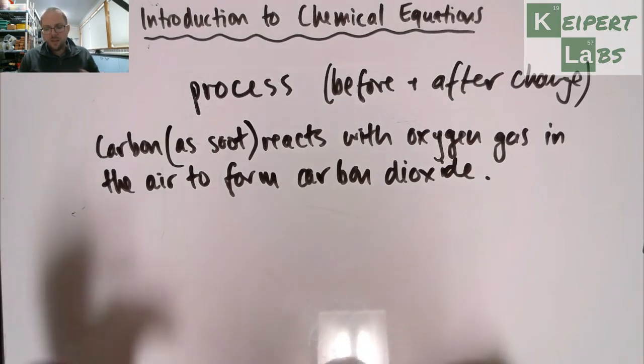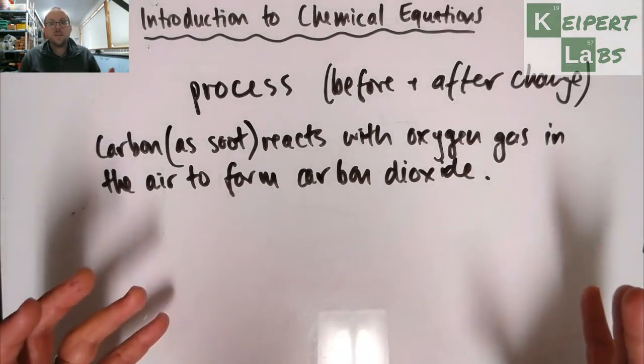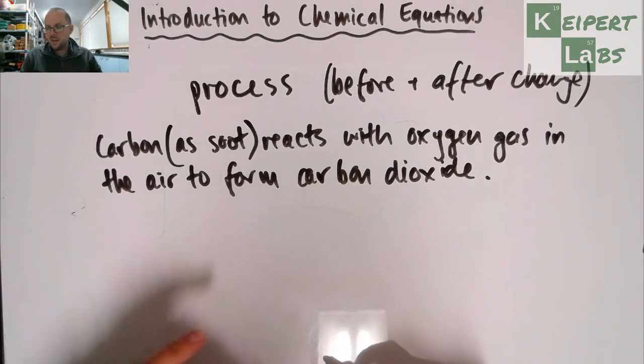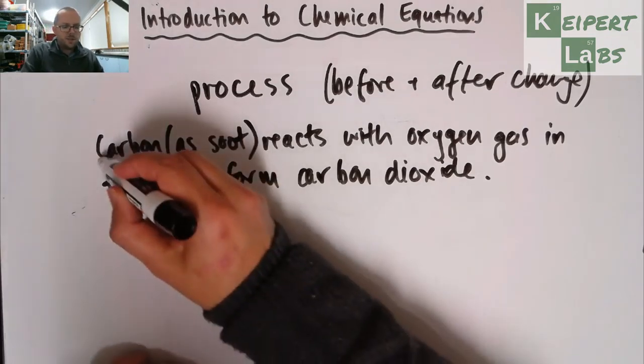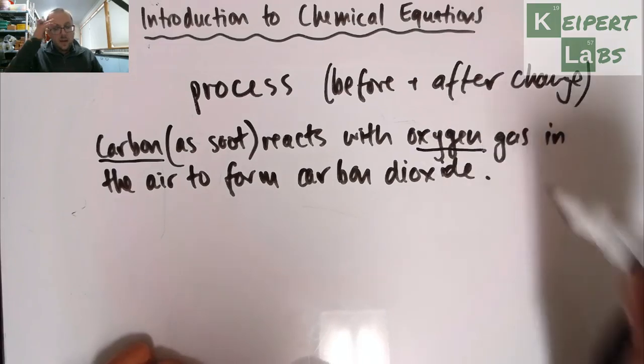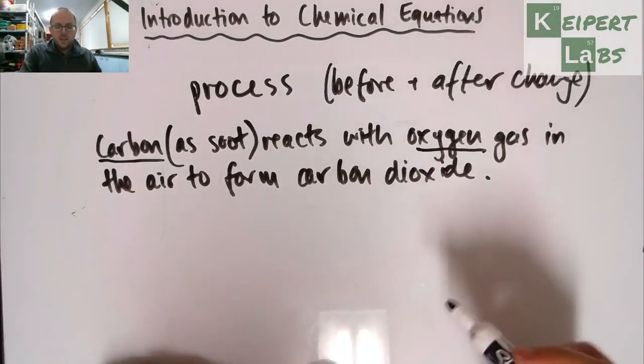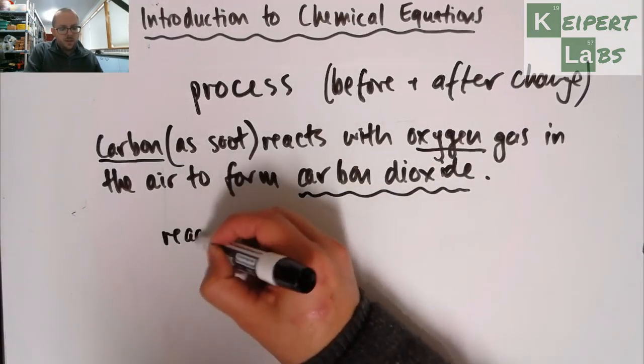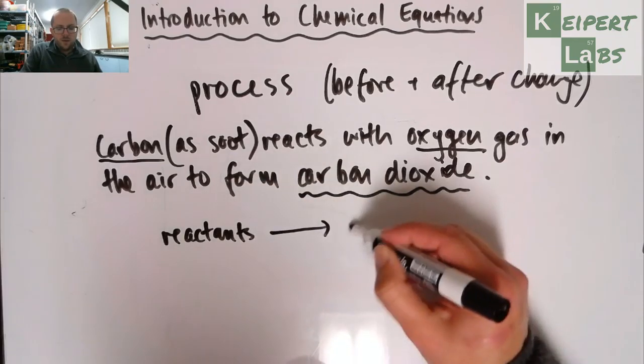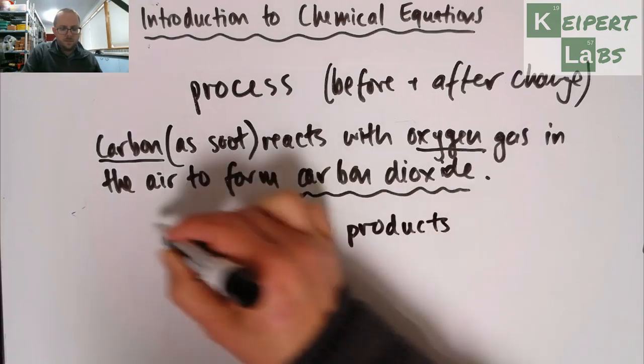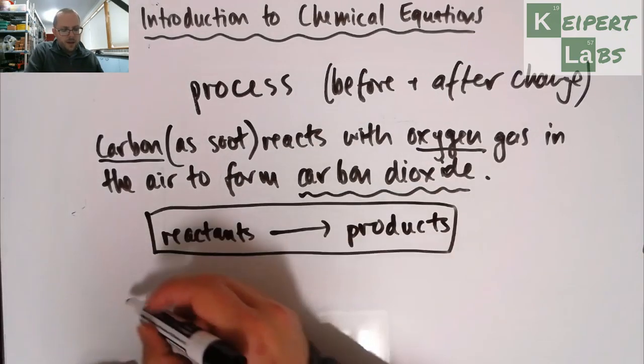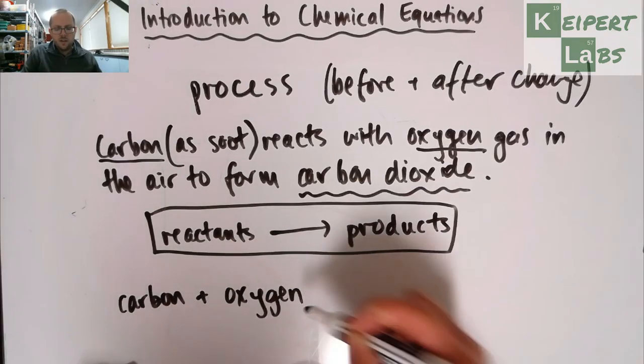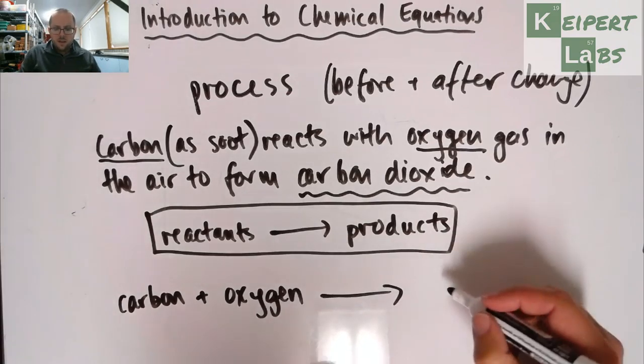However, if chemists always had to write these processes using statements like this, it gets very time consuming and tedious. And so we can represent it with our chemical equation. So we can think about our reactants. So in this case, we've got carbon and oxygen. So we've got reactants on the left and products on the right with an arrow in between. So I'm going to write carbon reacts with oxygen, so I'm going to write plus oxygen to form or become carbon dioxide.